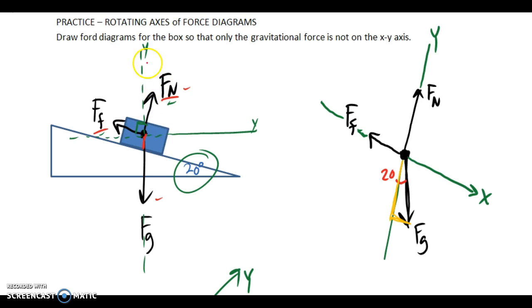If we rotate the axis, in this case clockwise 20 degrees, then the y axis will fall on top of the normal, the x axis on top of the friction.